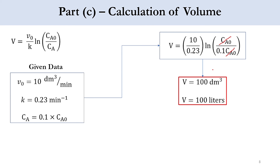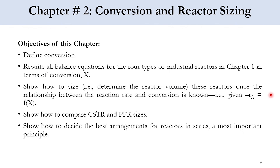That concludes chapter one. There are additional problems in the book you can solve, and if you find any difficulty, contact me via the comment section. Moving to chapter two — conversion and reactor sizing — which is still part of building block one. The objectives: define conversion, rewrite the balance equations for the four reactors in terms of conversion, then in upcoming lectures cover reactor sizing and comparison of CSTR and PFR sizes.